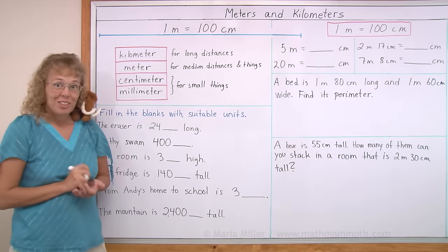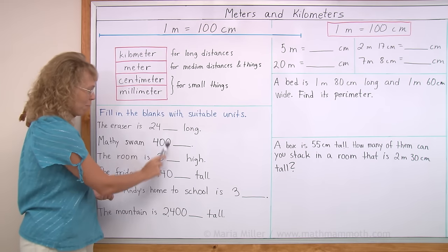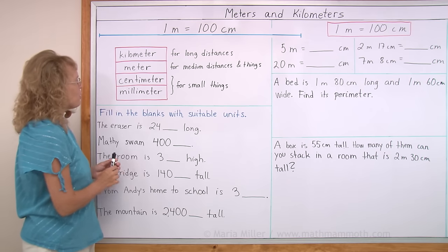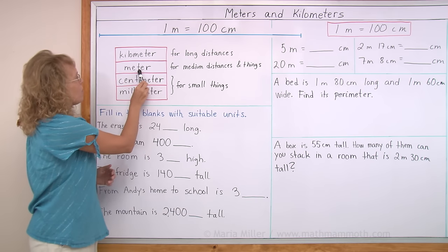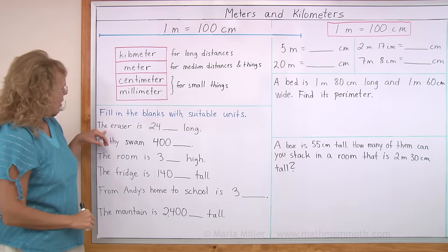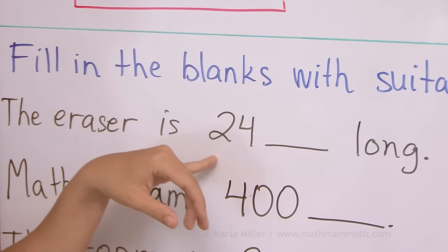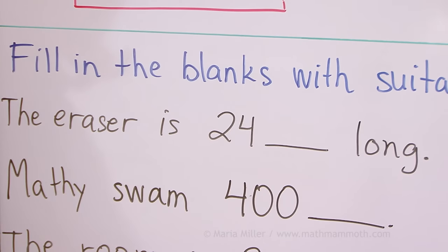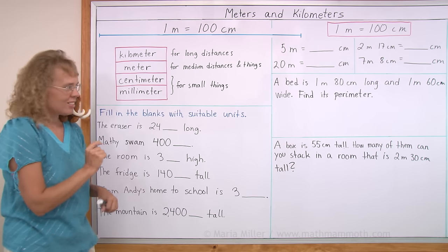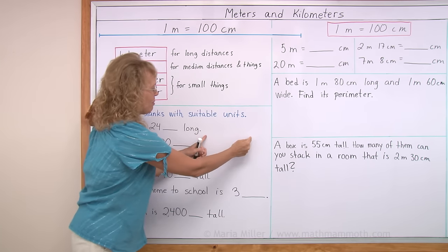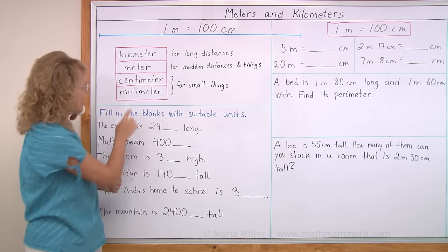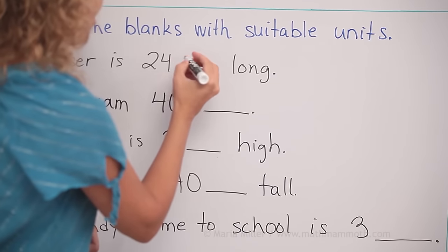Now let's go on and we're going to fill in these blanks with suitable units. So we would use millimeter, centimeter, meter or kilometer over here in these blanks. The eraser is 24 something long. What unit would you use? You think it could be 24 centimeters long? Something like that? Not quite. I think we need to use the smallest one, the millimeters. It's abbreviated with mm.